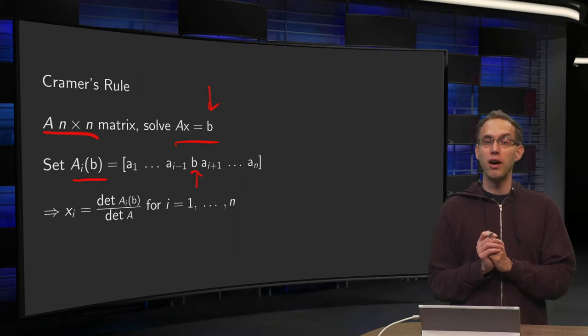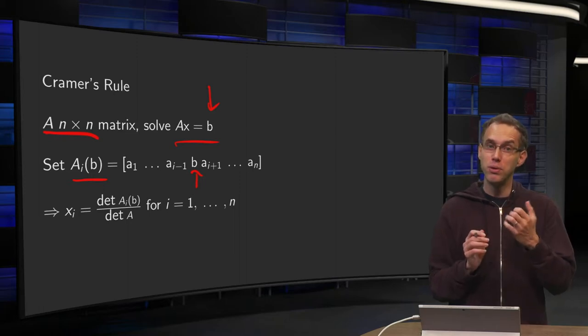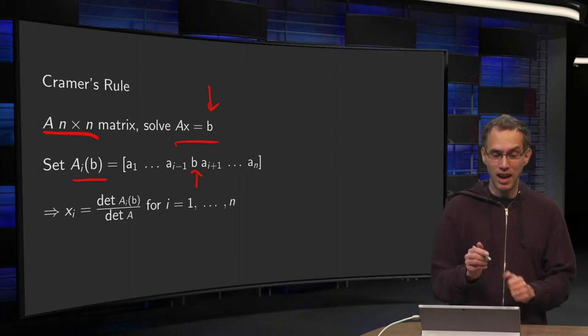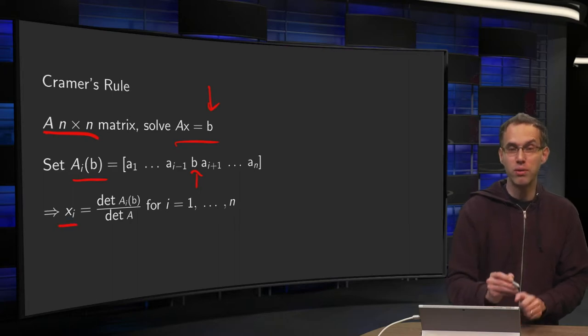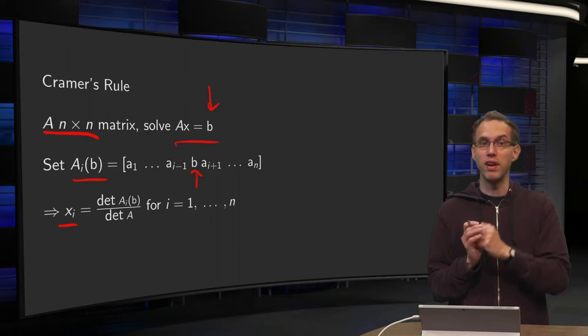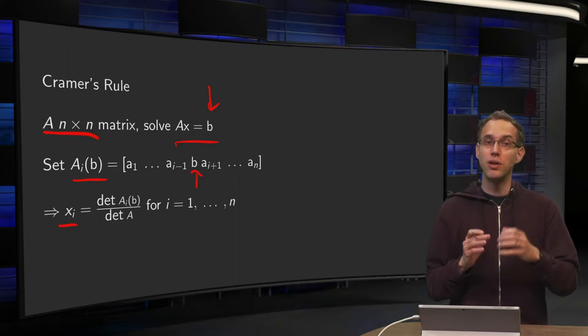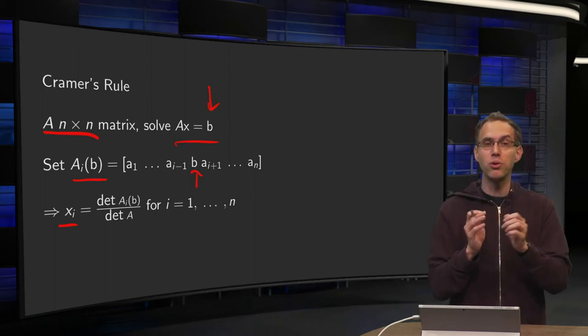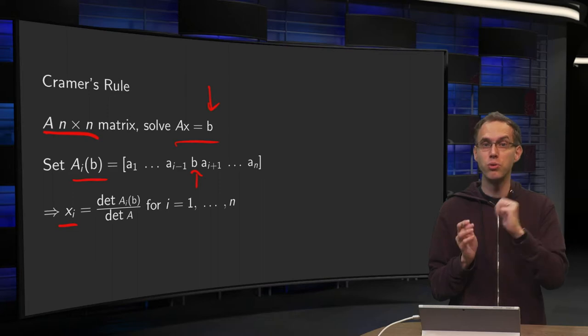And then, once we have done that, we can compute the x_i, the ith unknown, straight away by the quotient of two determinants: determinant of A_i(b) divided by the determinant of A. So using this rule, you can find straight away your x_i by just computing two determinants.